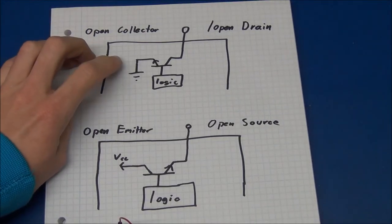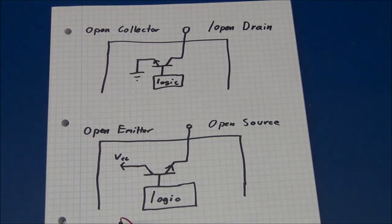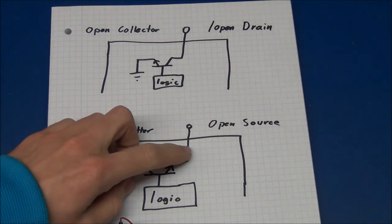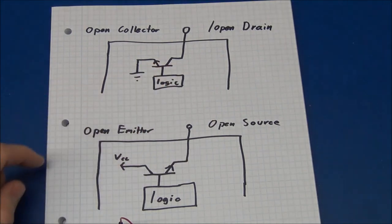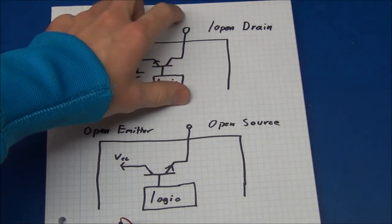And you can also make either of these a push-pull configuration by adding either a pull down or a pull up resistor, and then adding the two transistors on the output.